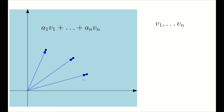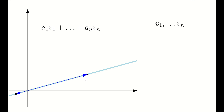In fact, if you remove one of them, you can still write every point in the plane as a linear combination of these two vectors. If you have this picture, though, the only points of the plane that you can write as a linear combination of these two vectors are the points on the line.